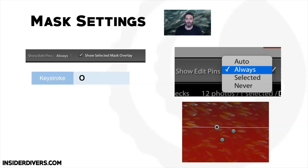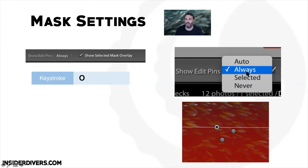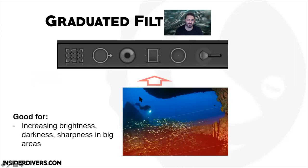To see this red color you need to select 'Show Selected Mask Overlay' — or easier, just press O for Overlay. That lets you switch between the mask view and no mask. You want to always have it activated. You can see we've got three tools down here, and if you don't set the pins to 'Always' then they won't be visible.